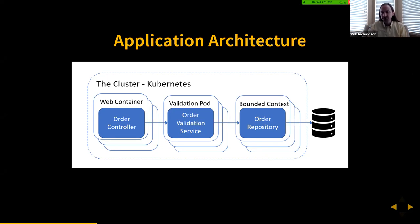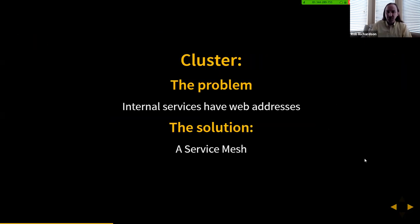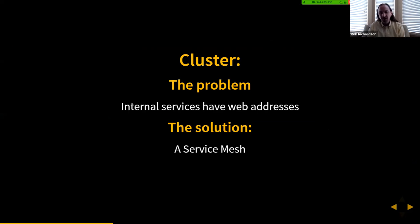Each piece is smaller — that's cool. But we have a new problem. This internal backend service that we hope nobody can get to now has a web address. Ideally, if we've created a cluster as a firewall around our system, this isn't exposed to the public — but it is exposed within the cluster. So how do we secure the internal pieces of our service? The solution to that is a service mesh.